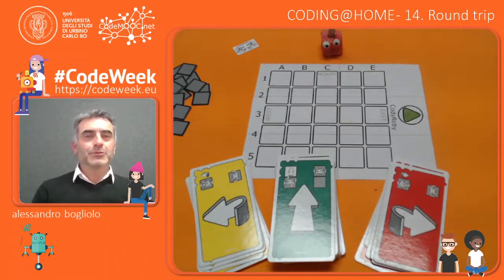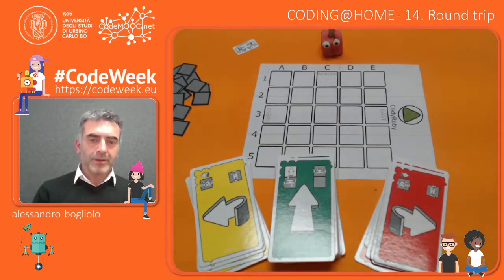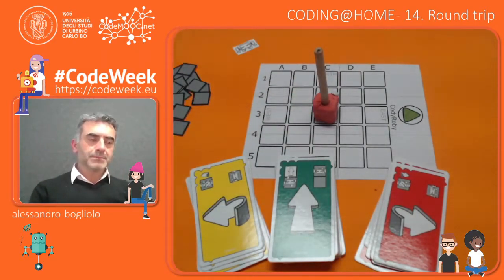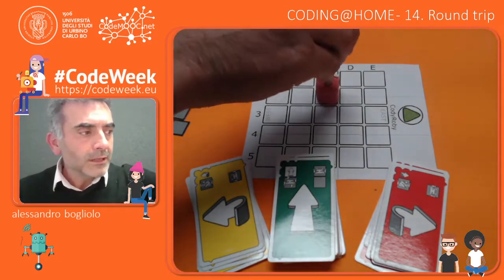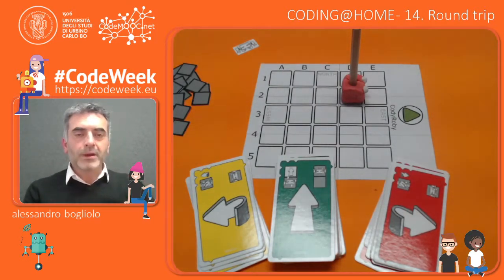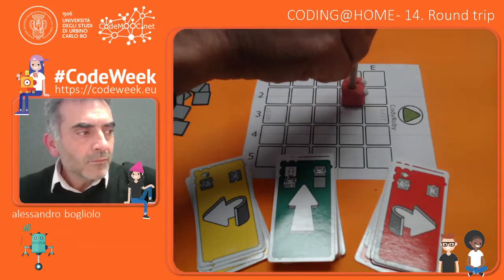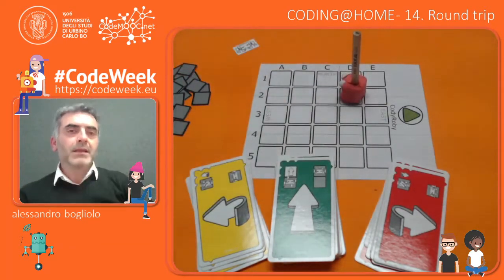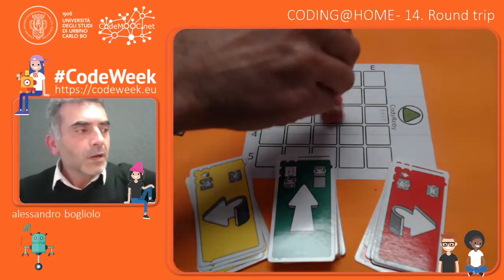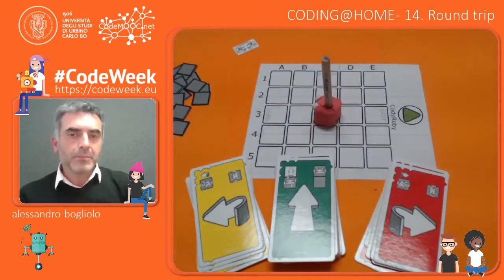Hi, welcome back to Coding at Home. The game we are going to play today is called Round Trip. The name comes from the fact that we are moving Robby, our robot, not only along a path which represents the outward journey, but we will also bring him back — possibly along the same path, or otherwise along a different path.